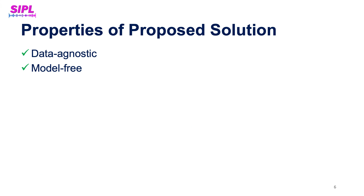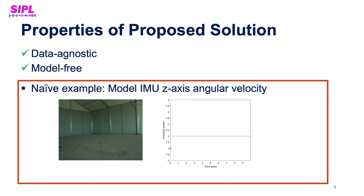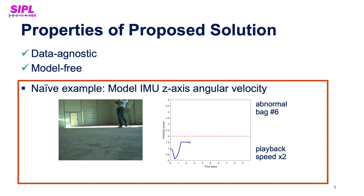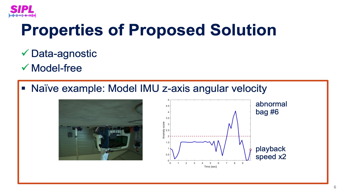Our solution has several attractive properties. It is data-agnostic and model-free, meaning it is not dependent on the domain of the data and no analytical description of the system is needed. To illustrate, consider a naive solution that looks at the variance of the z-axis angular velocity channel. While it gives good results for detecting drone flips, it is data-dependent and assumes that a drone flip is an abnormal event. It overfits the specific dataset and cannot generalize to different types of anomalies and additional data.